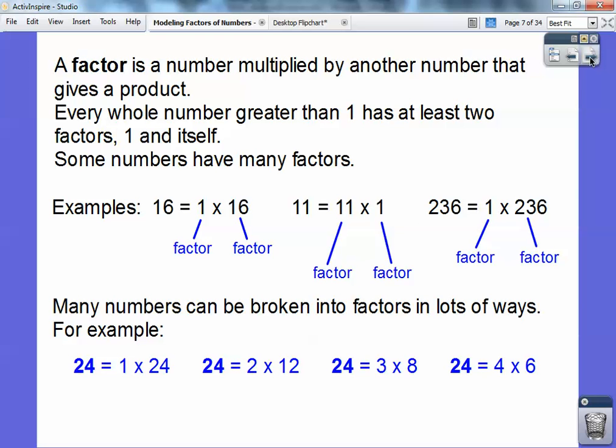But, many numbers can be broken into factors in lots of different ways. So, for example, 24, you guys, 24 is 1 times 24, so 1 and 24 are factors. 24 is also equal to 2 times 12, so 2 and 12 are factors of 24. 3 and 8 are also factors of 24, because 3 times 8 equals 24, and so does 4 times 6. So, those are all factors of 24, okay?